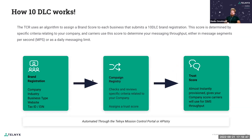How 10DLC works is based on the brand. Brand registration means you submit information through an automated process — that's important to say — through the Campaign Registry. Here you want to submit company information, industry, business type, website, and your tax ID or EIN. Once you submit that information, the Campaign Registry has an algorithm which calculates what is called the brand score — your score in terms of credibility or reliability in the market. At the end of this process, you will be assigned what is called a trust score.